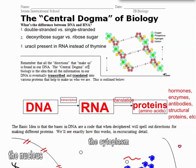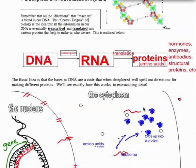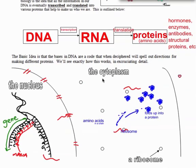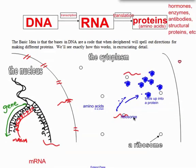Continuing on from the previous video, we started talking about the central dogma of biology — DNA to RNA to proteins. The processes are called transcription and translation. This is a visual of what was actually going on.